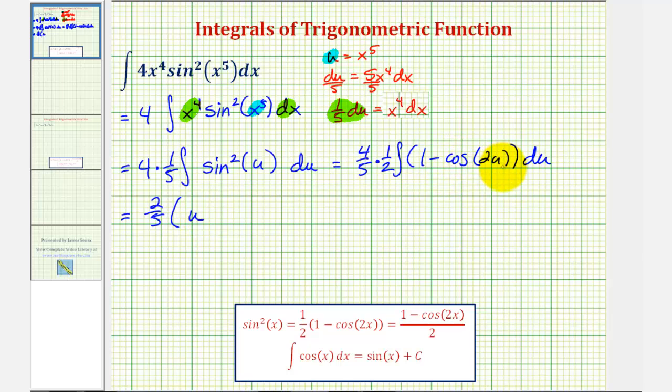When we integrate cosine two u, we would have a u-substitution. Let's call it a v-substitution where v would be equal to two u, and therefore dv would be equal to two du.